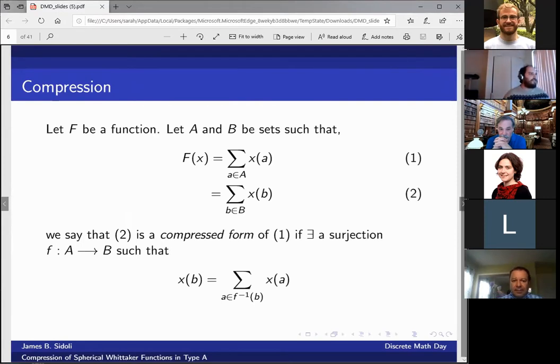We're going to let F be a function, A and B be sets of combinatorial objects. We have these two series representations of F(x), where we say that the second series representation is a compressed form of the first if there exists a surjection between the sets of combinatorial objects from A to B, such that the sum of the terms in the preimage of an element in the codomain add to that corresponding term. This is very nice to have for a function, and we want to see it happen for the spherical Whitaker function.